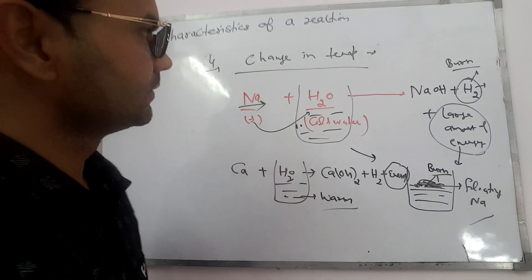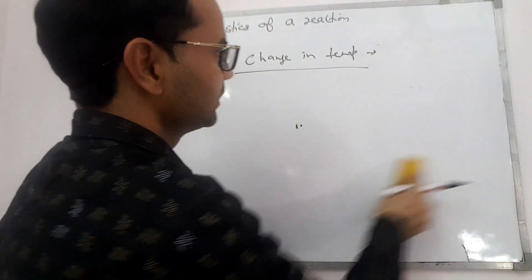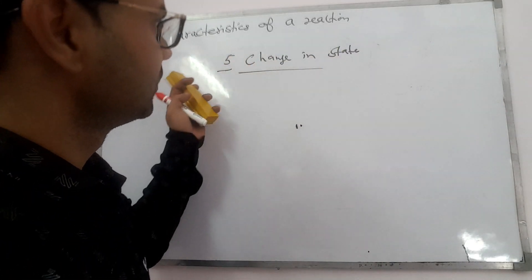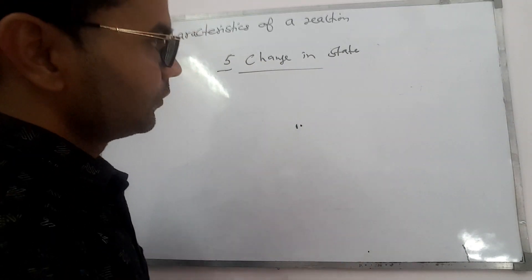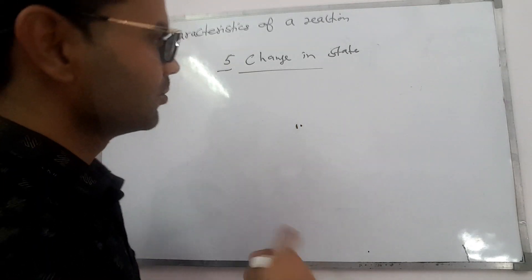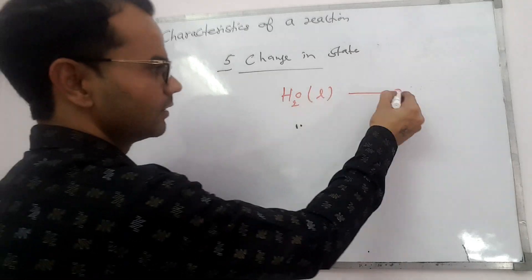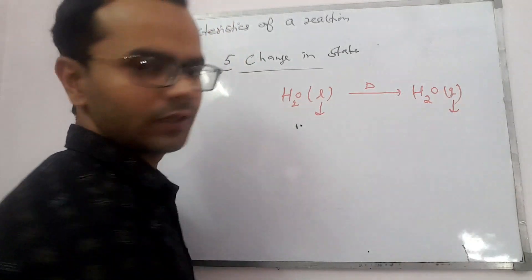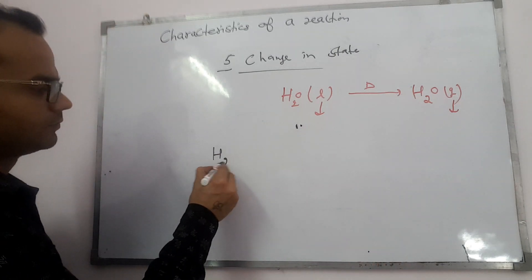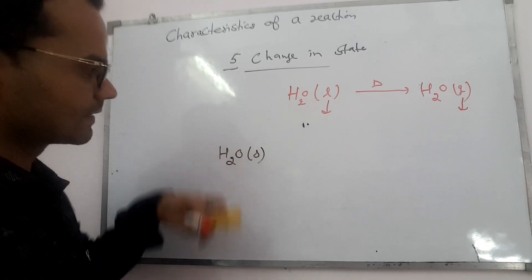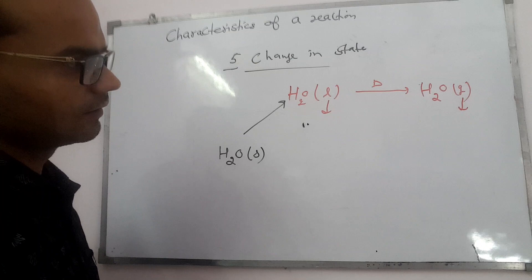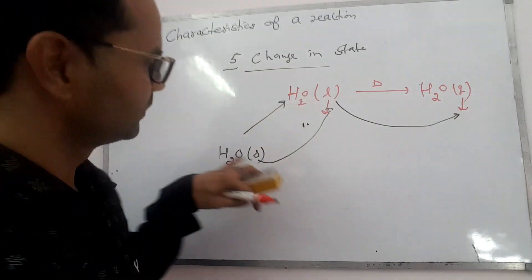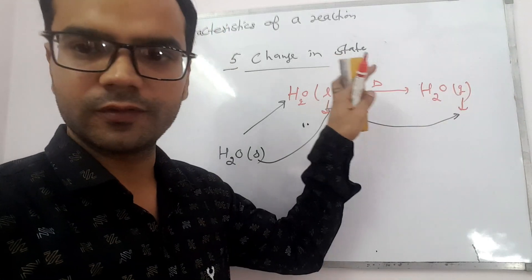The fifth and last characteristic is change in state. During this, there is no chemical change — only the physical state changes. A simple example is water: when water is boiled or heated, it converts into gas — liquid state to gas state. Another example: if you take ice and heat it slightly, it converts into liquid — solid to liquid. In ice, water, or vapor, the formula remains the same: H2O. So only physical states are changing, not the chemical composition.